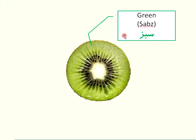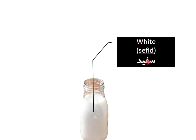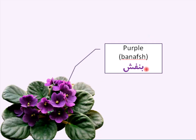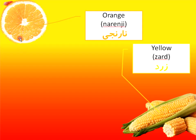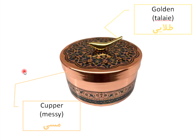Let's start with the colors. First one is green. For black, we have two words: siyah and meshki. We also have orange — narenji. And yellow — zard.